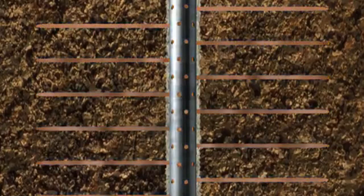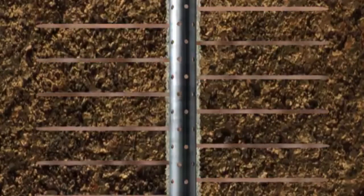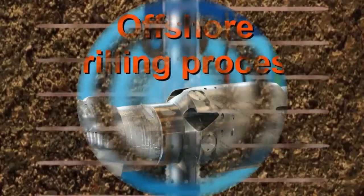If the well is seen to have production potential, the reservoir interval is lined with casing. The casing is then perforated to allow reservoir fluids to enter the well and travel up the installed completion-production string to surface.